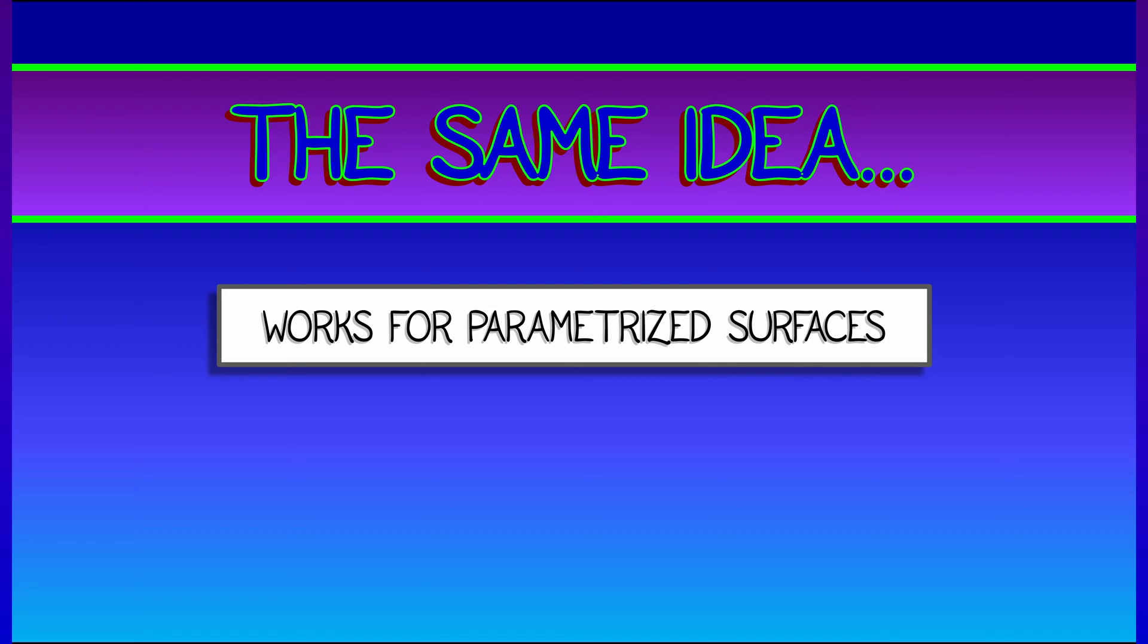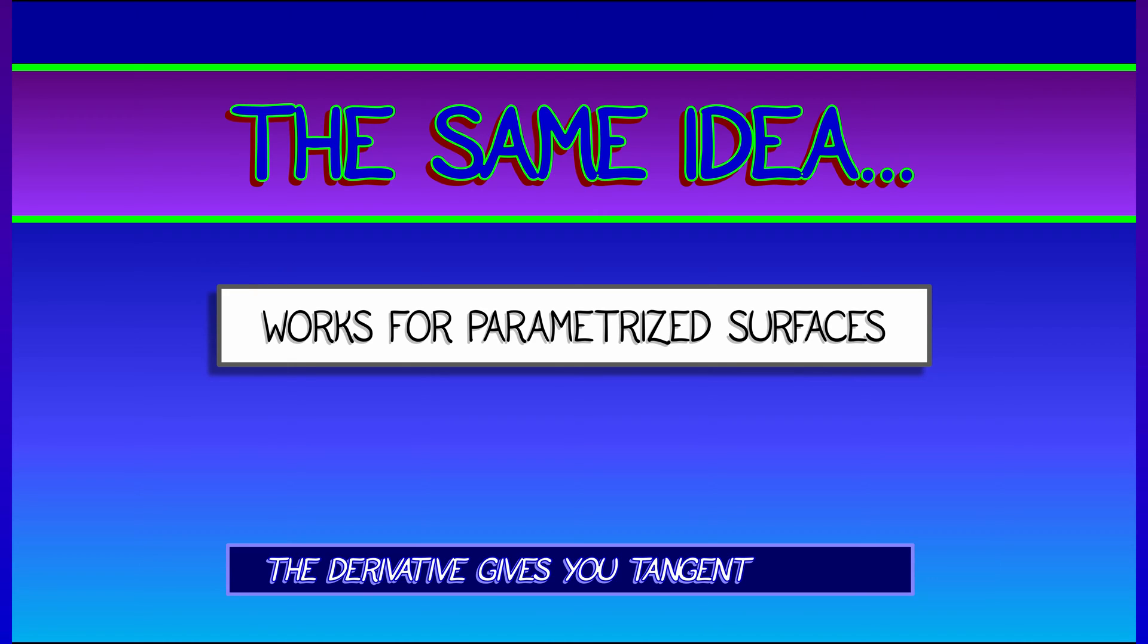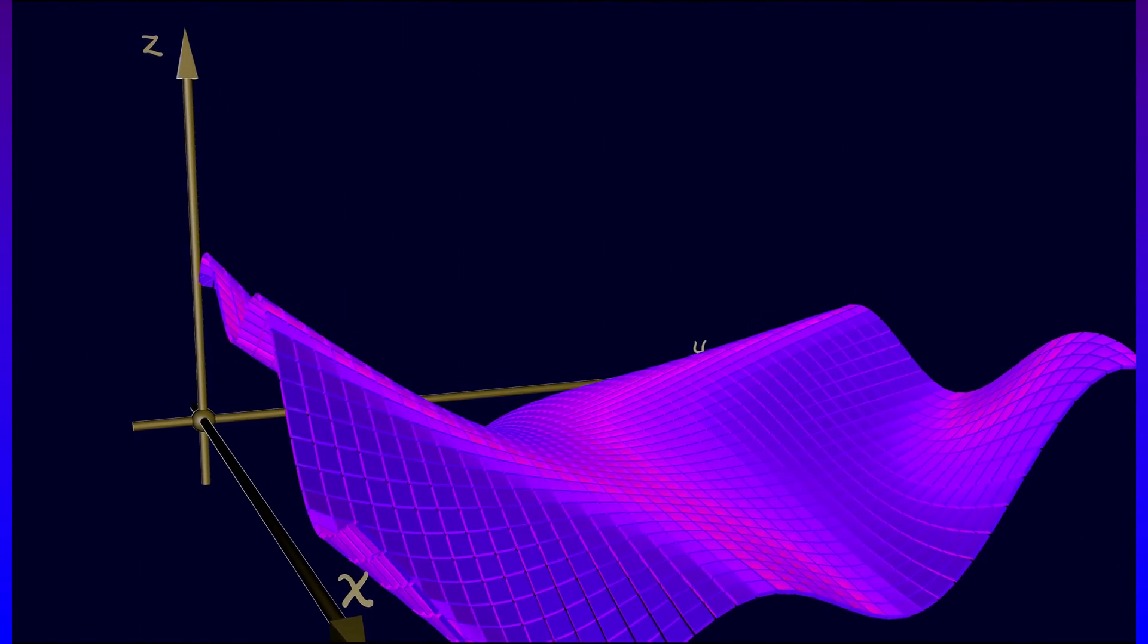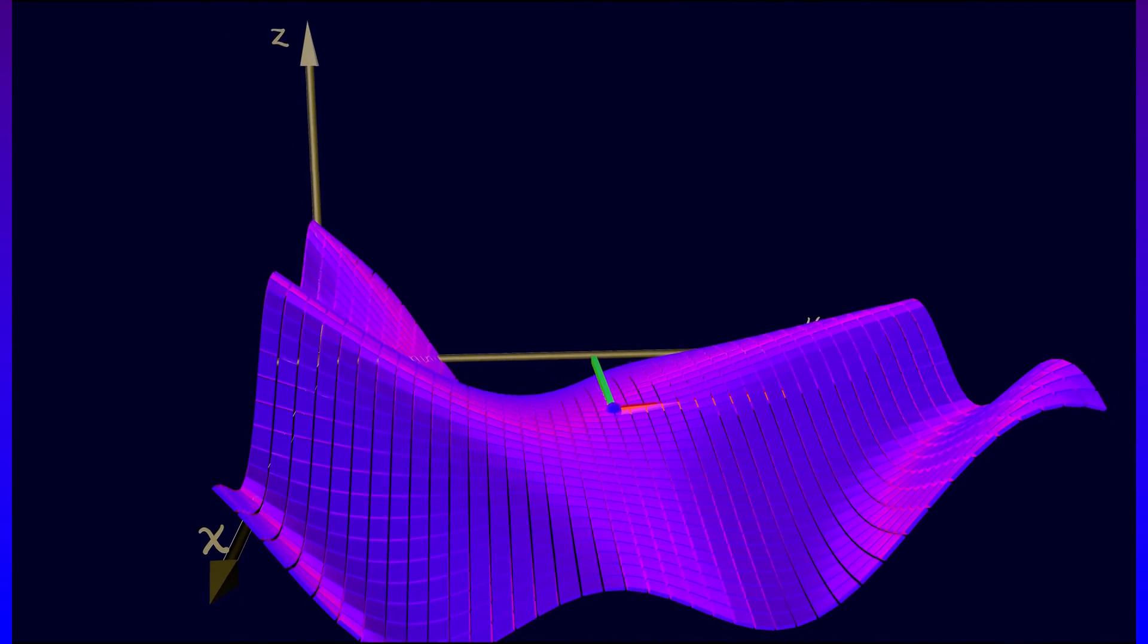The same idea works for parametrized surfaces in 3D, but it's a little more complicated. Again, the derivative is what gives you not one tangent vector, but two tangent vectors. This is something that you really need to look at to see.